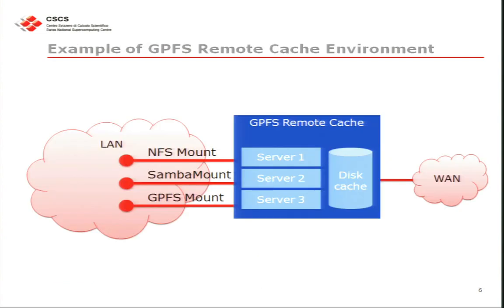There's a missing slide here with the list of modes you can use to define AFM. Right now it's possible to define AFM as single-writer mode, which means you can cache data from one GPFS to another, but the data that are valid — that you have to use for writing and reading — are located on the remote cache.